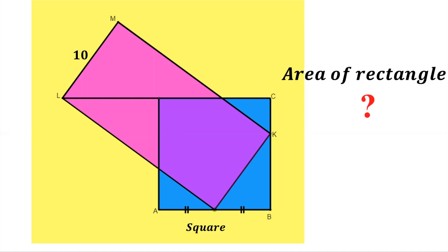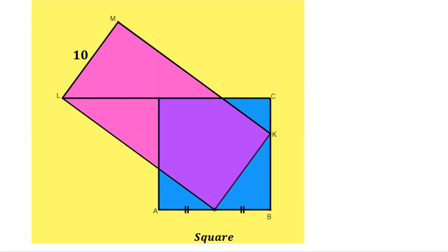How can we solve this geometric puzzle? Let us consider the solution together. Since the breadth is 10, this side is also 10. We can label the part from one side to the midpoint as X and the other as X as well, since the rectangle is at the midpoint. This means the length of the square is 2X, because a square has all sides equal.